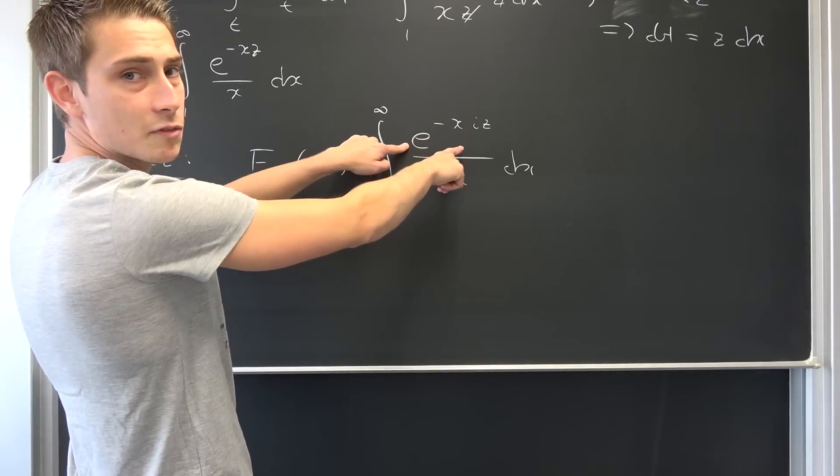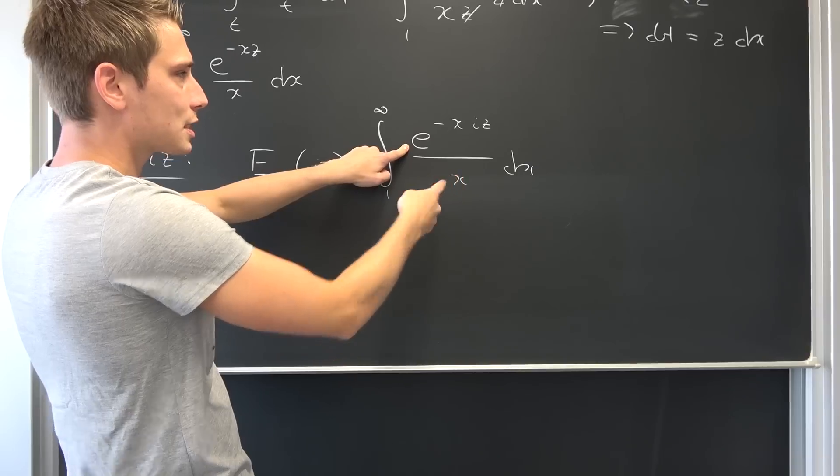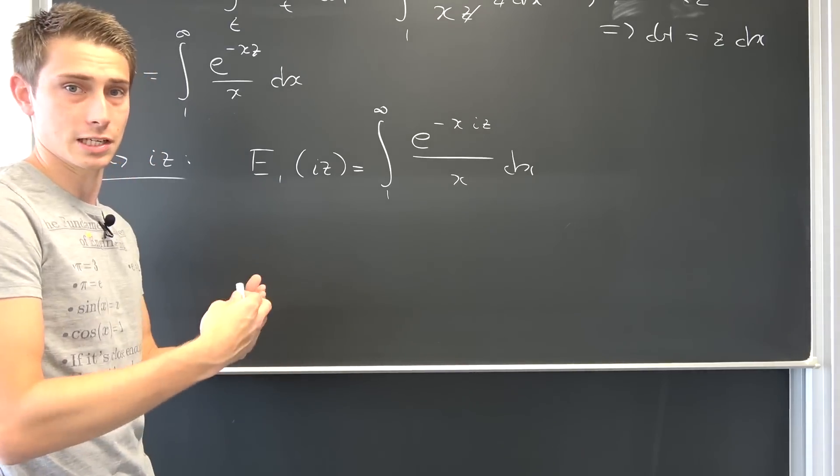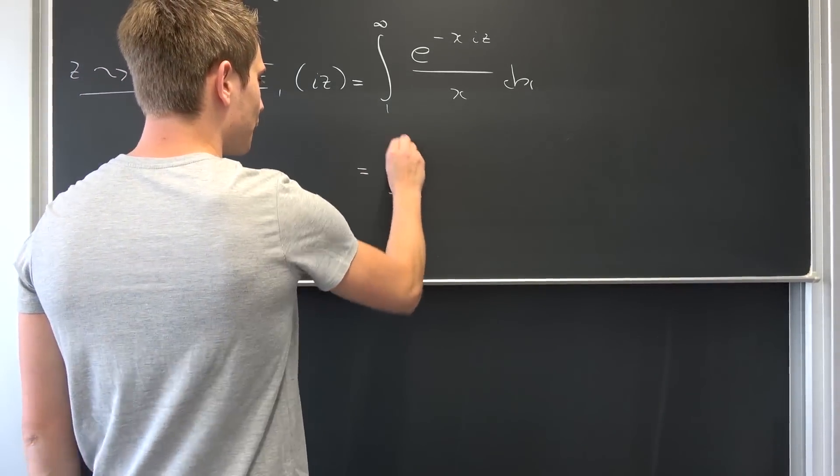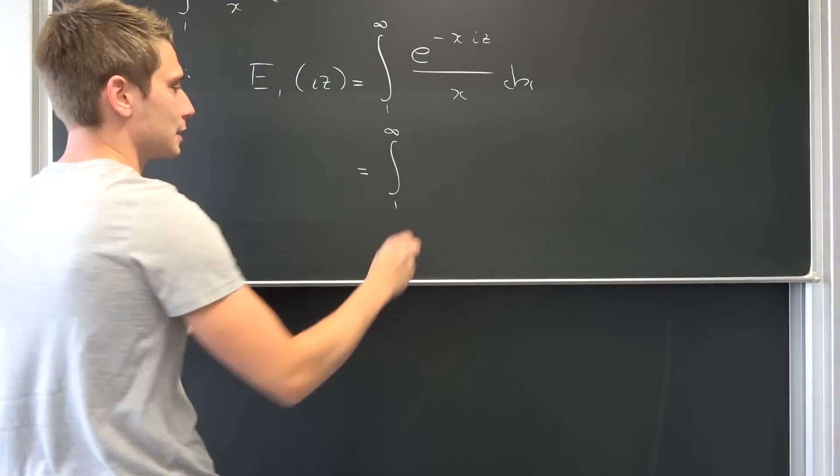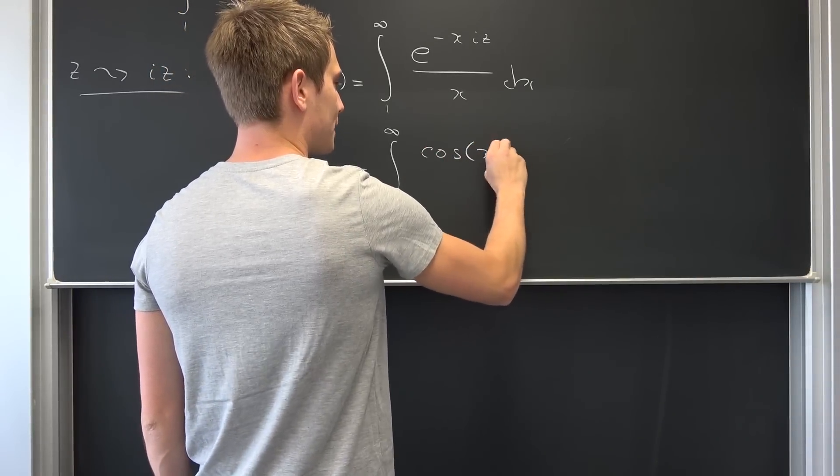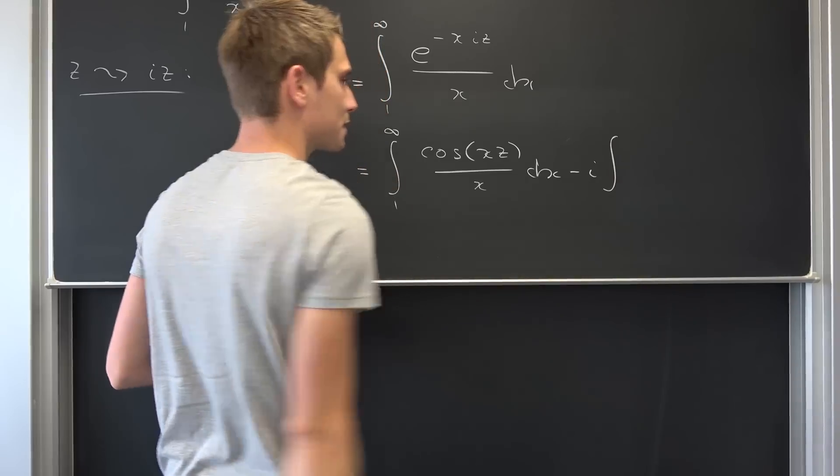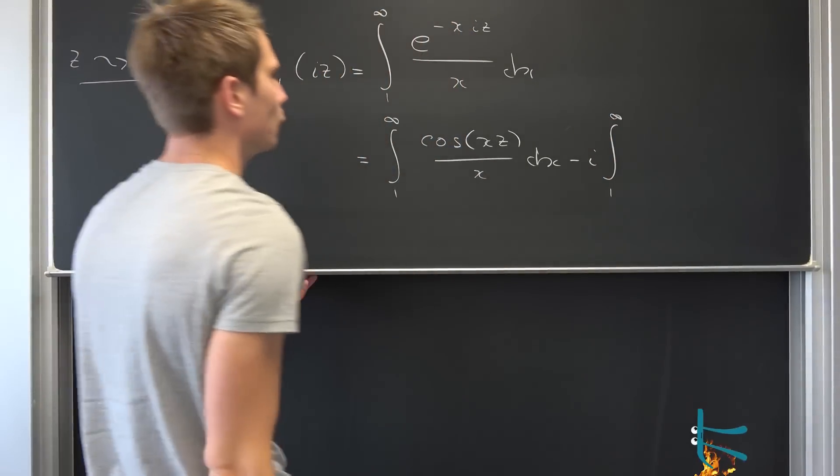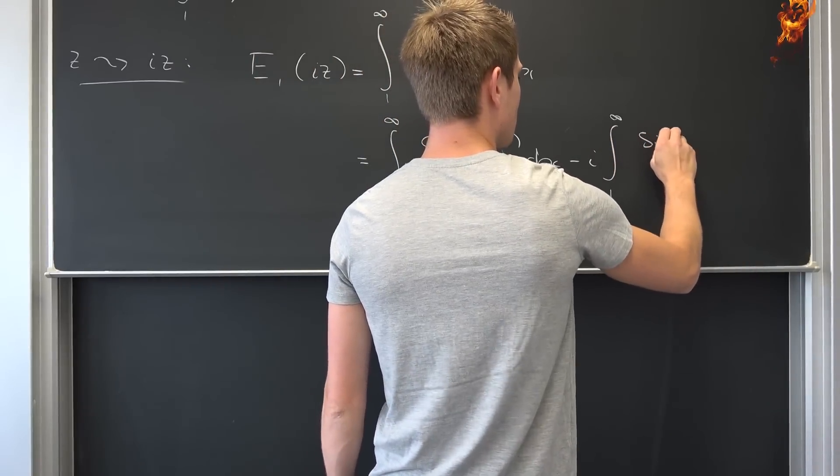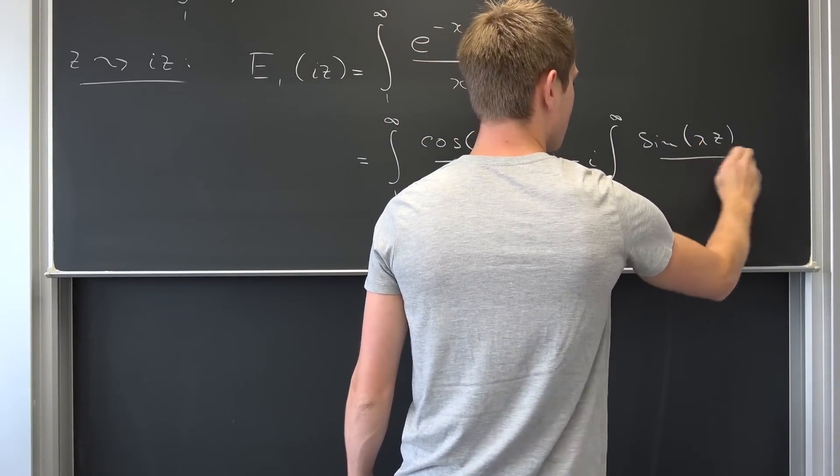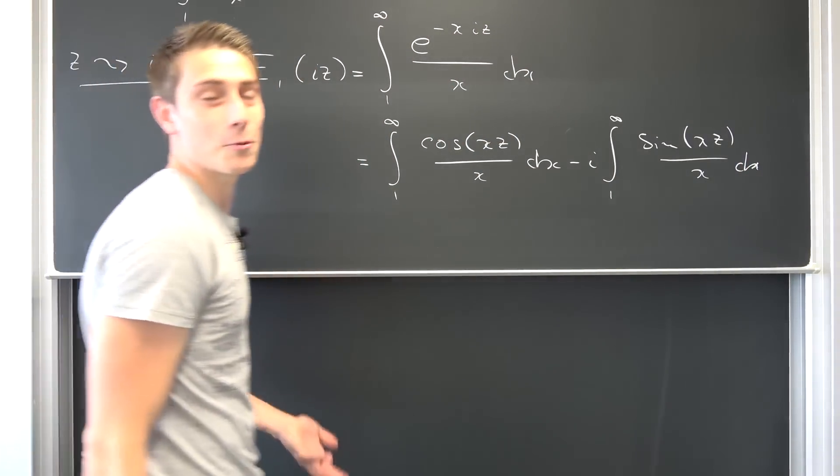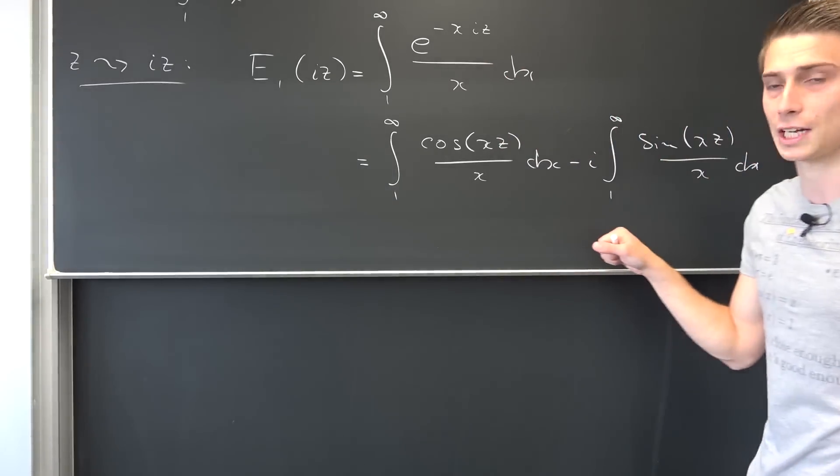Meaning, e to this something is nothing other than the cosine of x times z minus i times the sine of x times z. And then we can use linearity of the integral to break this up into the integral from 1 to infinity of the cosine of x times z over x dx, minus i times the integral, same upper and lower bounds as before, of the sine of x times z over x, integrated with respect to x. And well, this is it. We are basically done with most of the calculations right here.